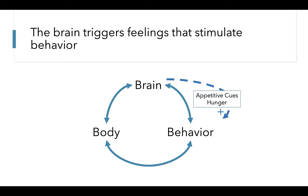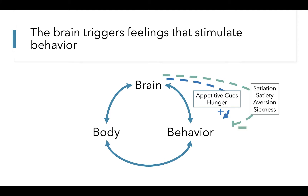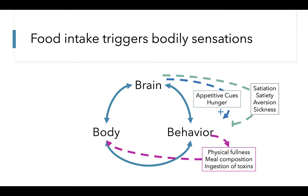Once a meal has begun and the ingested food enters the oral cavity, the brain senses the various components of the meal including the taste and texture of the food. These chemosensory sensations communicate the presence of preferred energy-rich nutrients, such as fat and sugar, that promote further eating. As food is swallowed and enters into the gastrointestinal tract, additional hormonal cues accumulate to regulate when we stop eating by signaling feelings of satiation. These cues also regulate satiety, aversion to certain foods, or food-related sickness. Food intake then stimulates bodily sensations that send signals back to our brain to communicate how much and what was eaten.